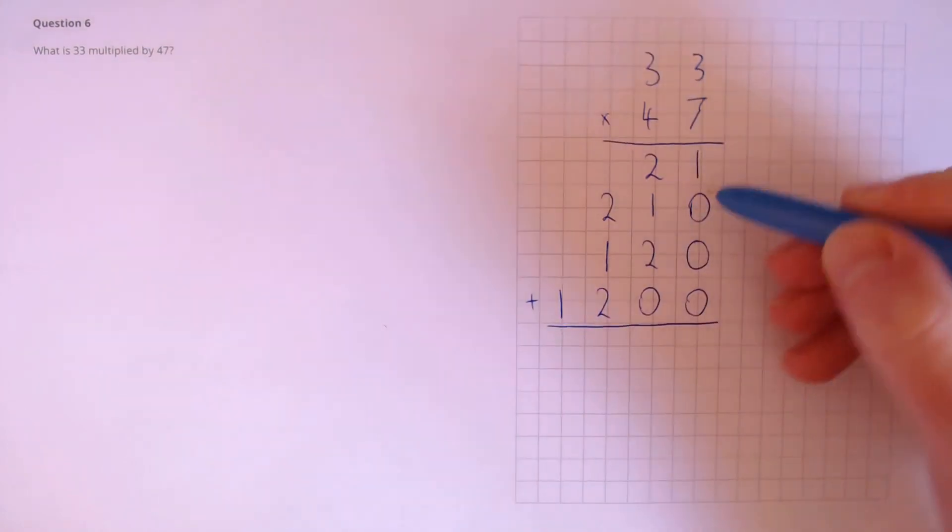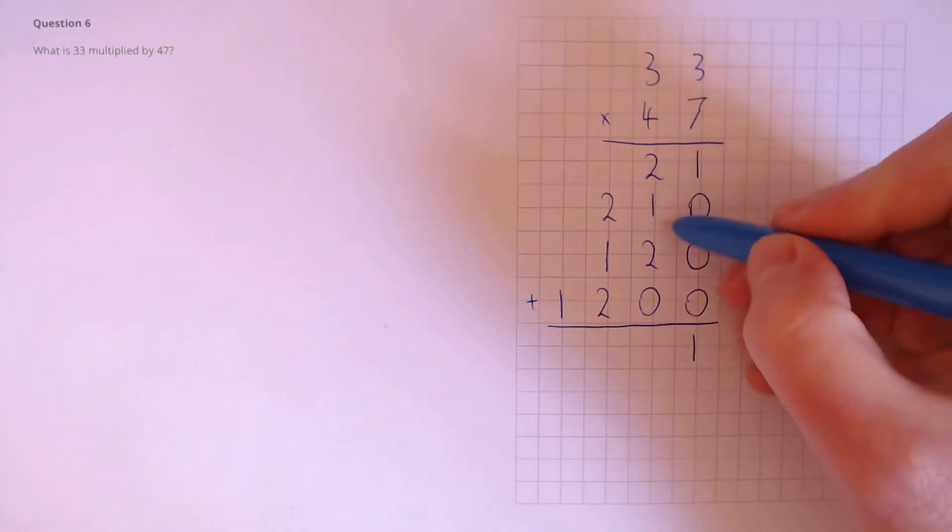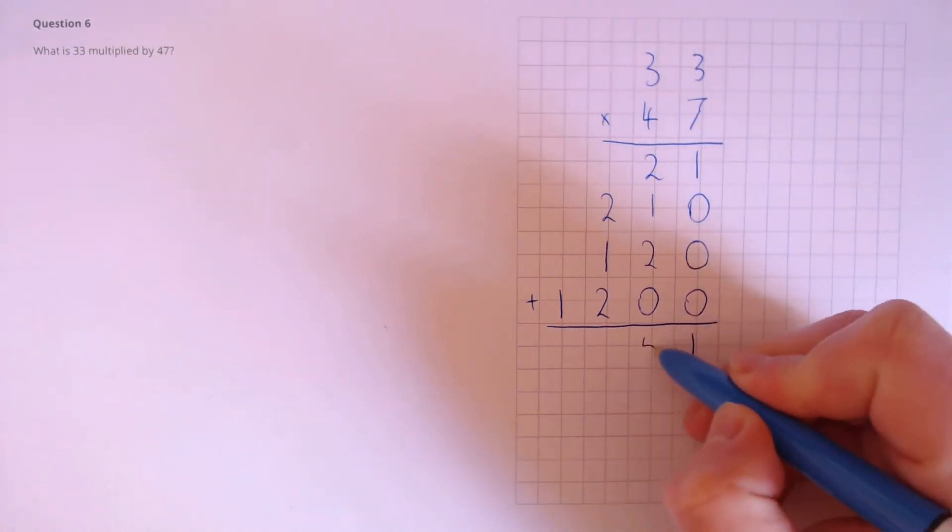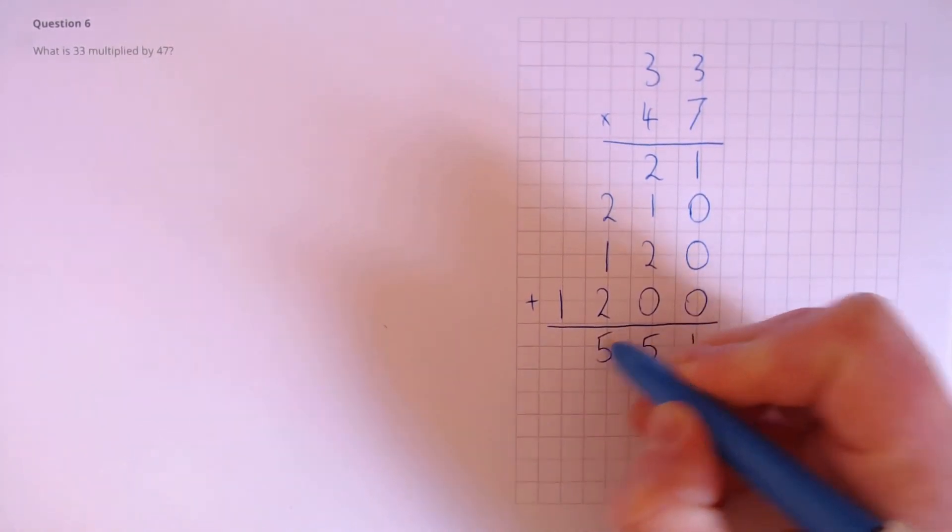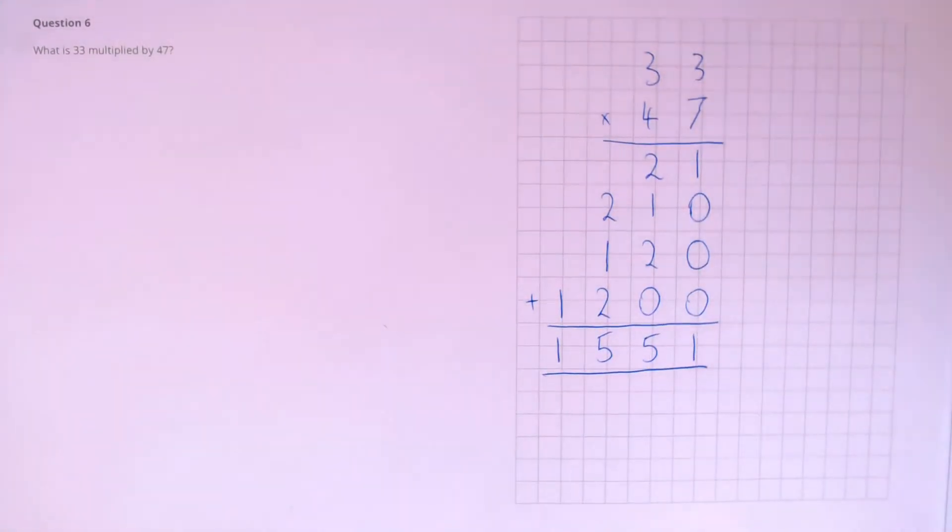Finally, we need to add up these four numbers. So, here we've got 1. 2 plus 1 plus 2 is 5. 2 plus 1 plus 2 is 5 again. And 1, giving our answer of 1,551.